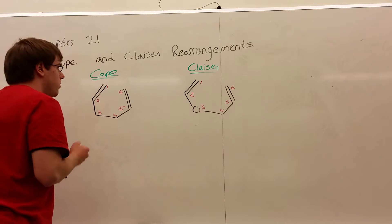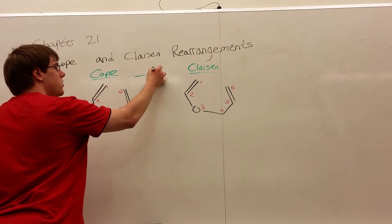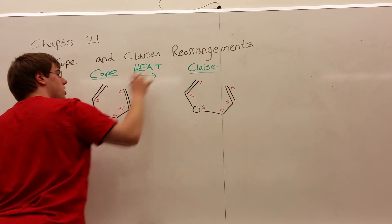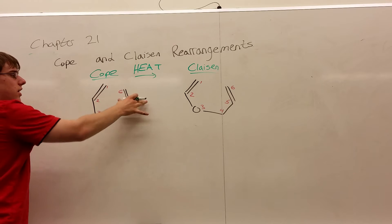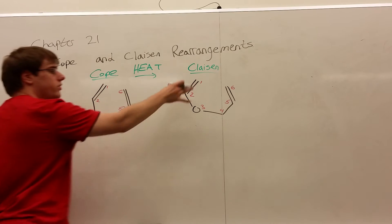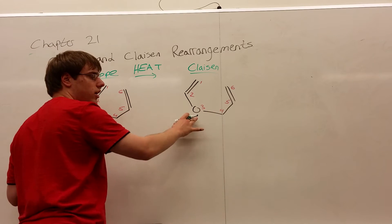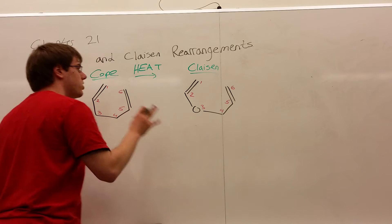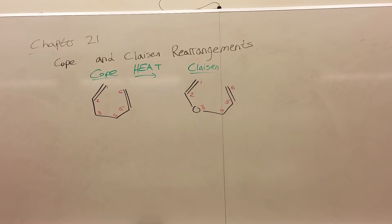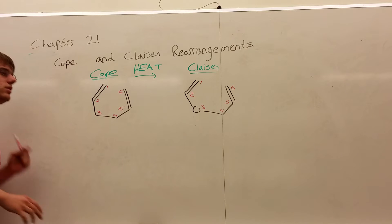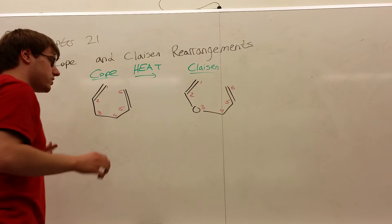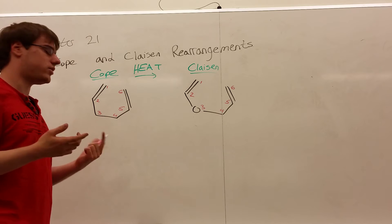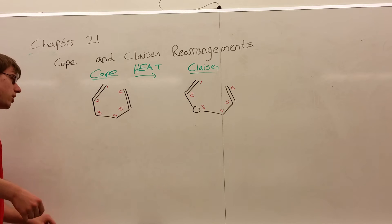What will be over the arrow for these reactions is the same — you will always see the word heat. So if you see either a six-carbon chain with two double bonds at the end with heat, or a five-carbon chain with an oxygen in the middle with two double bonds on the end and the word heat, you're going to be doing one of these two rearrangements. The nice thing about them is their mechanism is exactly the same; the only thing that differs is the reactant and the product you get.